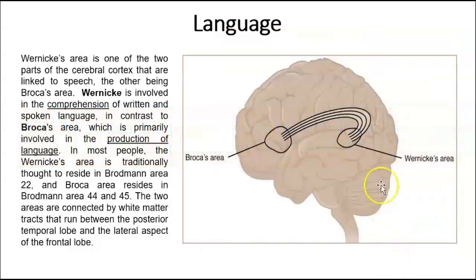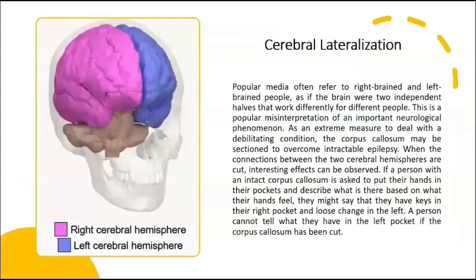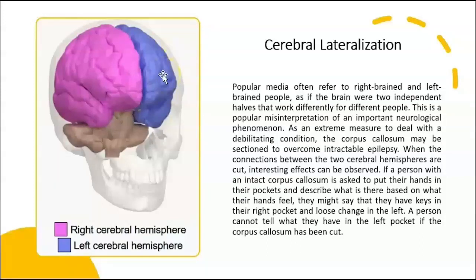For language, there are two main areas: Wernicke's area, which is for understanding language, and Broca's area, which enables you to actually speak. These are two completely different areas — one for understanding, one for the ability to talk. Regarding cerebral lateralization, the right and left hemispheres are not one more dominant than the other, but rather each is more specialized in certain things. For example, one hemisphere may be more specialized in math, while the other may be more specialized in music and creativity.